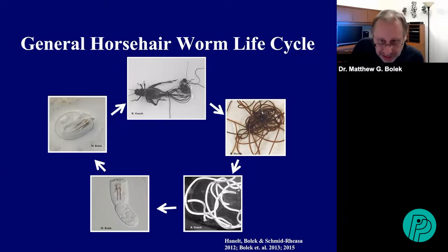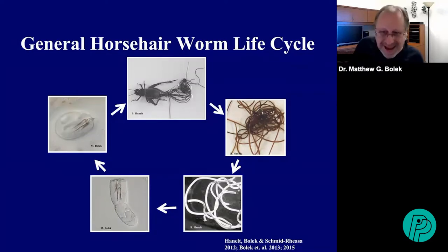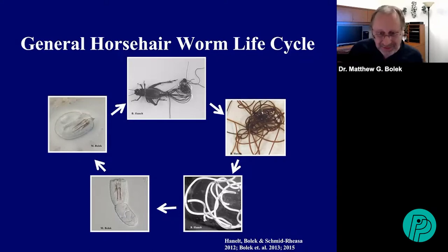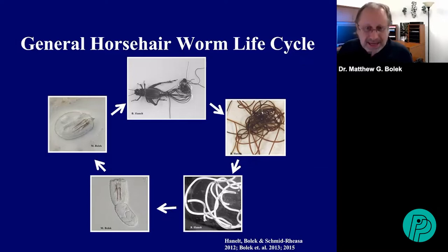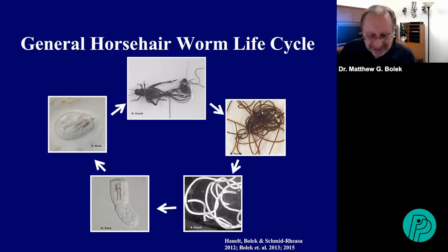They have a fascinating life cycle. Starting with the cricket: when the worms become mature, they emerge from the abdomen of the cricket into water. There they form Gordian knots and start mating. Once done mating, they release egg strings. Those egg strings hatch into sessile larvae that fall to the bottom of the pond. Those larvae get ingested by almost any aquatic invertebrate. Some of those invertebrates, such as insects, will metamorphose and come out on land, and when they're eaten by crickets, those crickets become infected.